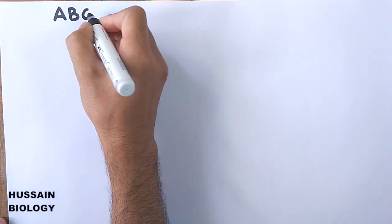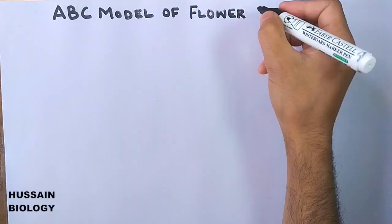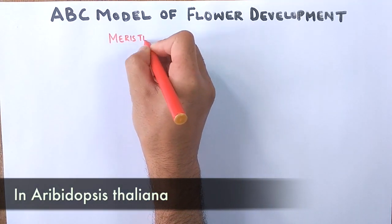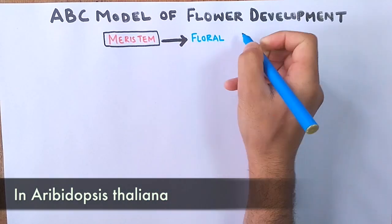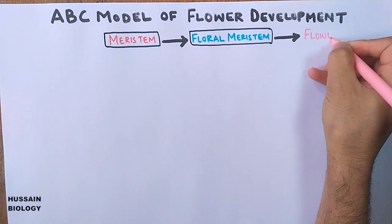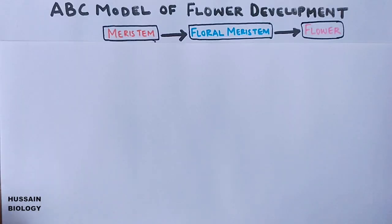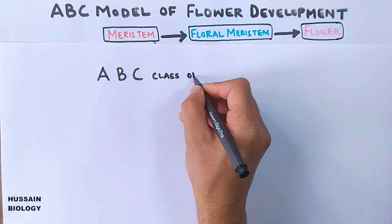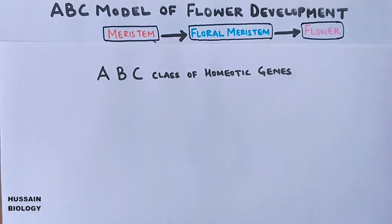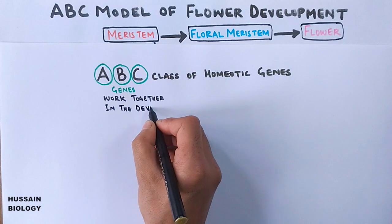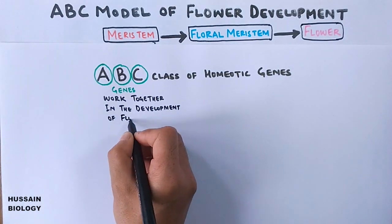In this video we will be discussing the ABC model of flower development. This model explains how the meristem develops into floral meristem and then finally into a flower. It has been given the name ABC because these are the classes of homeotic genes which work together and interact in the development of the flower.